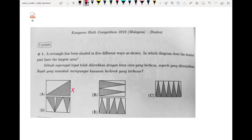I will cancel out A because the shaded area is exactly half of the entire rectangle. For B, I can break it into four separate rectangles, and in each of these separate rectangles the shaded area is exactly half, so I will also cancel out this answer.